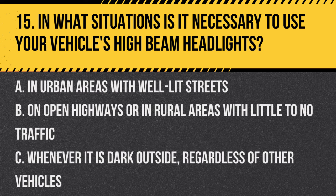Question 15. In what situations is it necessary to use your vehicle's high beam headlights? A. In urban areas with well-lit streets. B. On open highways or in rural areas with little to no traffic. C. Whenever it is dark outside, regardless of other vehicles. Answer: B. On open highways or in rural areas with little to no traffic. High beams are used for better visibility in poorly lit areas, but must be dimmed when other vehicles are near.